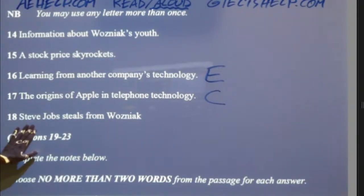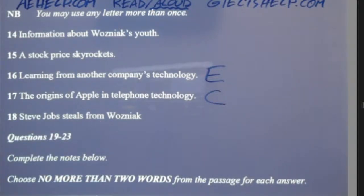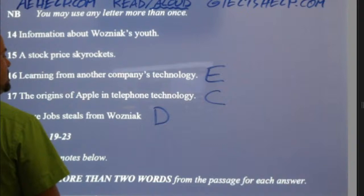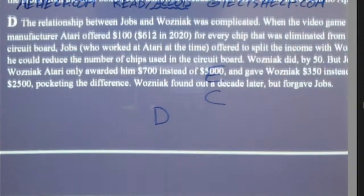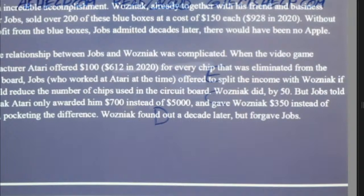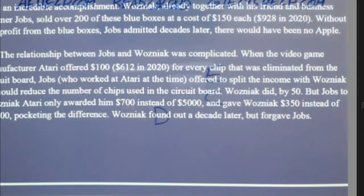Matching number 18: Steve Jobs steals from Wozniak. I kind of remember the amounts as well. Steve Jobs steals from Wozniak — where was that from? It's around D — super easy to check because it's all those numbers. Where he didn't pay his fair share for those chips. You can see it: 'The relationship between Jobs...' — and then it gives all those numbers. So that's D. When you're 90% sure, it only takes a second to reach 100%.